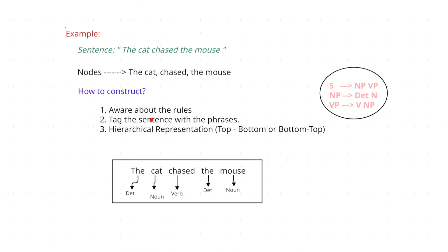To construct a particular phrase structure graph, you have to follow three rules. First, whatever example sentence is given, you have to divide that sentence into NP (noun phrase) and VP (verb phrase). Second, if you want to further divide the noun phrase, you can divide it into determiner and noun — you cannot divide determiner and noun further. Third, if you want to divide the verb phrase, you can divide it into verb and noun phrase, and that noun phrase can again be divided into determiner and noun.